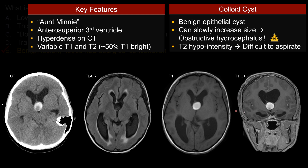The degree of T2 hypointensity — the so-called motor oil consistency — can dictate how easily the lesion can be aspirated. So the appearance on T2-weighted sequences may determine which surgical approach the surgeon wants to take. It should not enhance. On T1 post-contrast, you may see a very thin rim enhancement, but centrally you should not see any enhancement. This is a cyst, not a neoplasm.